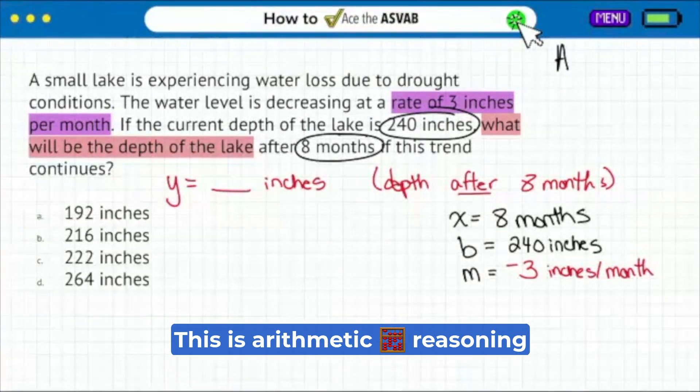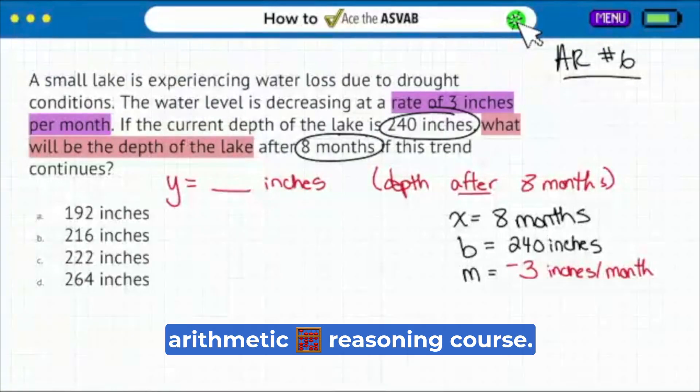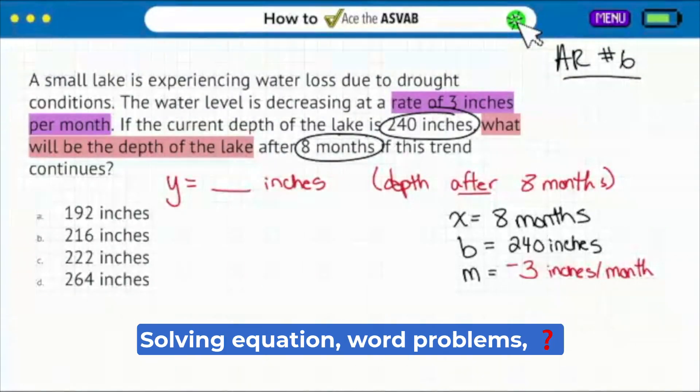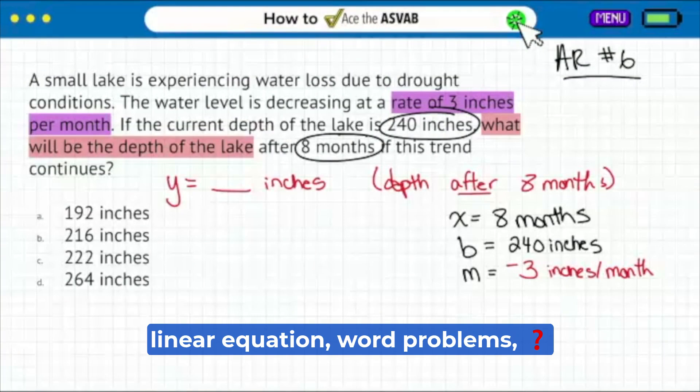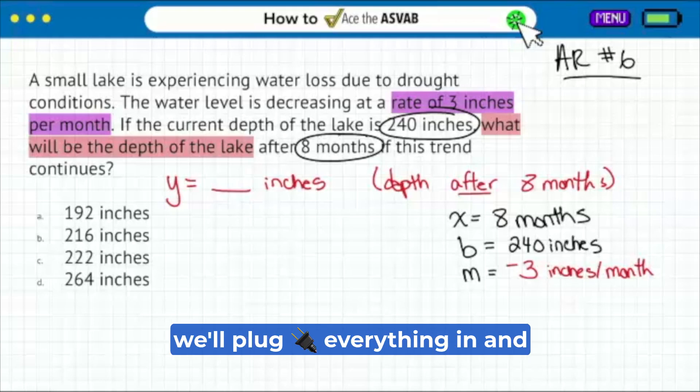And Ja, I saw your question. This is arithmetic reasoning unit number six in our arithmetic reasoning course, solving equation word problems. So with that, we'll plug everything in and we're good.